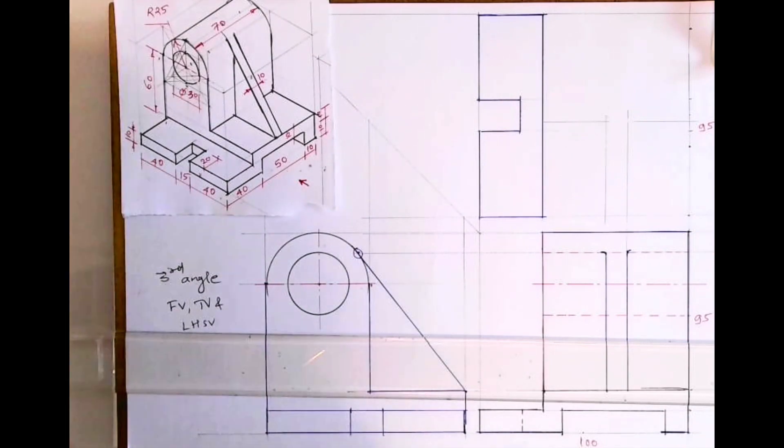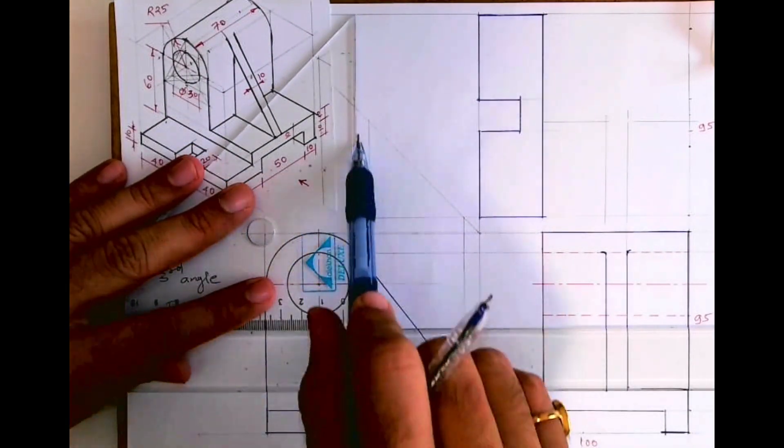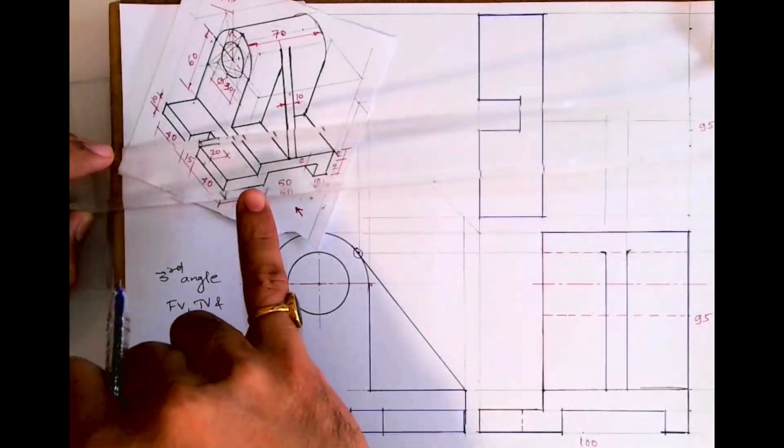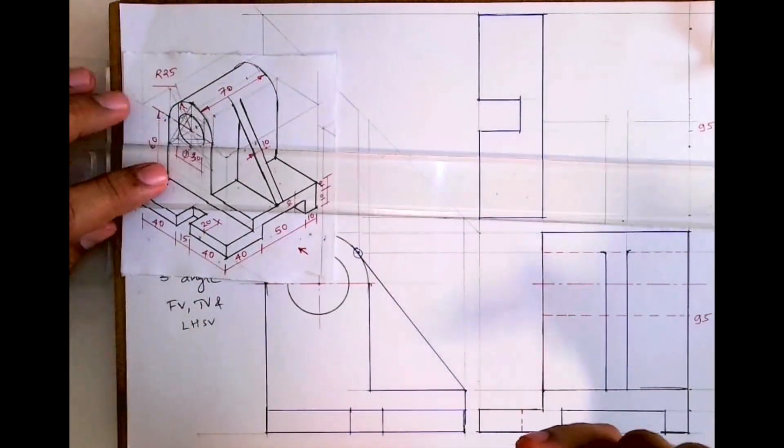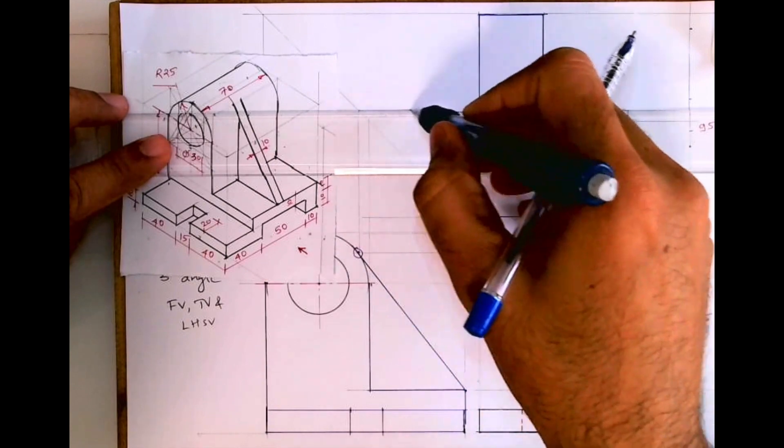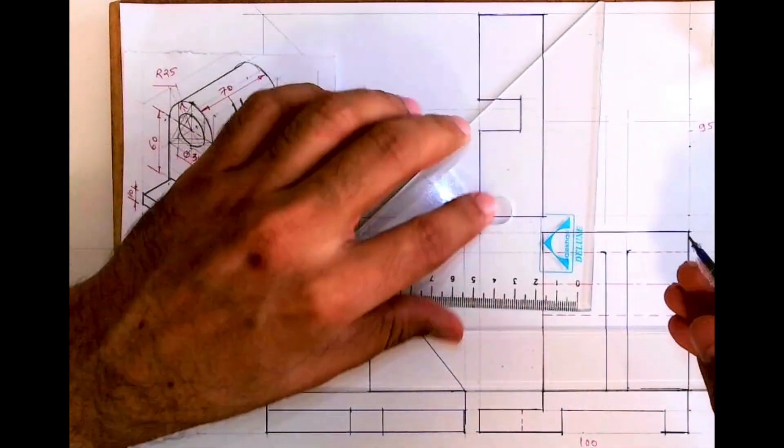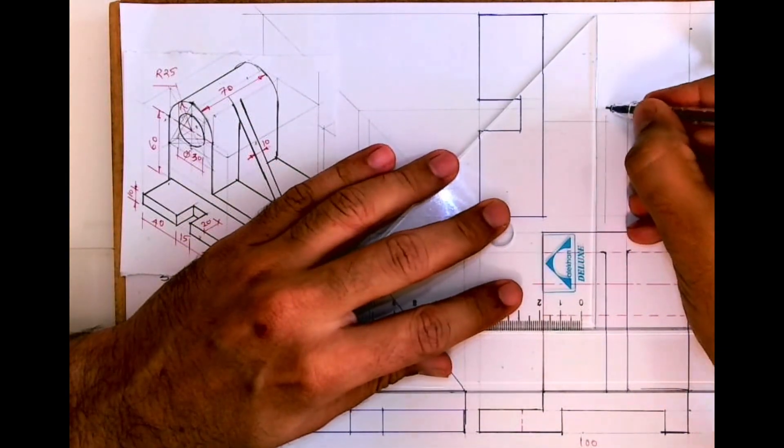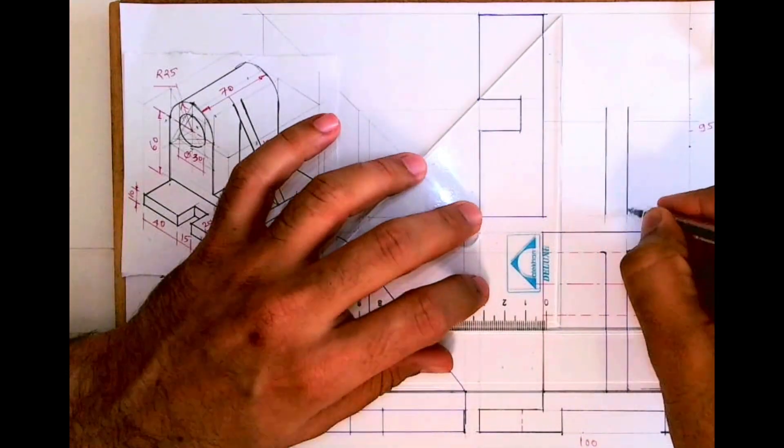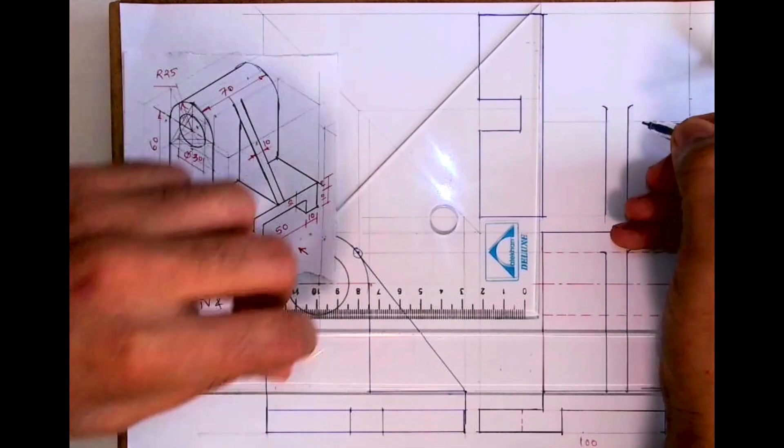So from here, see this will project up, the same point which we used in front view. Now same point I will take it up. You don't have to do circle like this in exam, it is only for your understanding I'm doing this. And from here you draw horizontal line, so wherever they intersect with those vertical lines, so your rib will be till that part and you draw a slight curve on both the side.